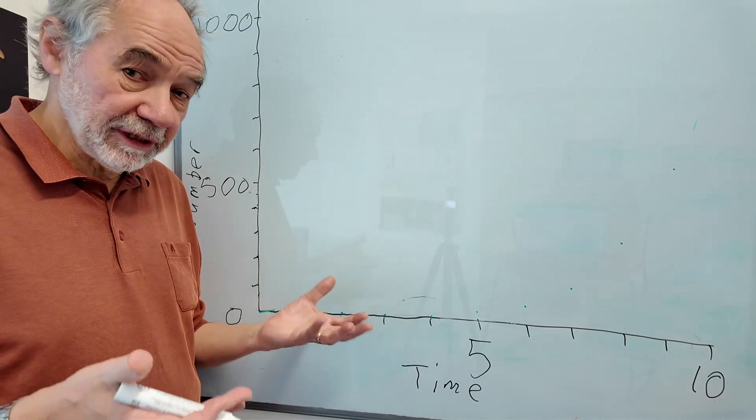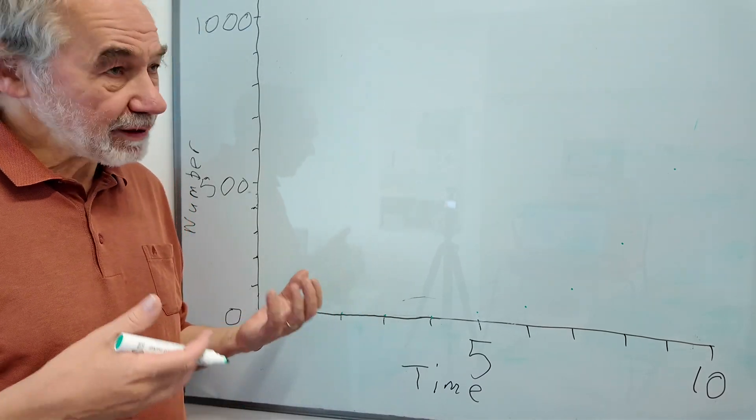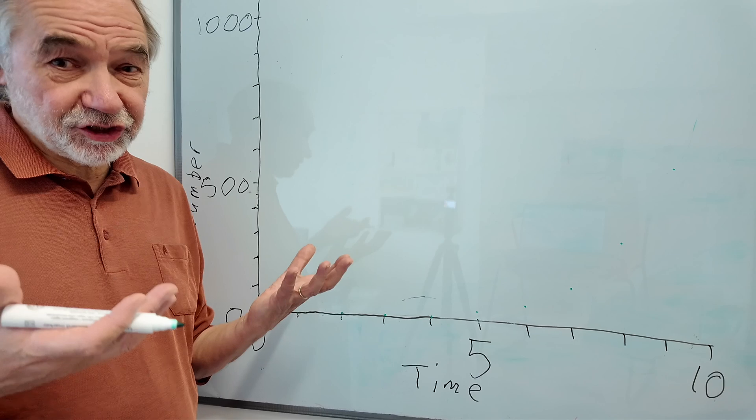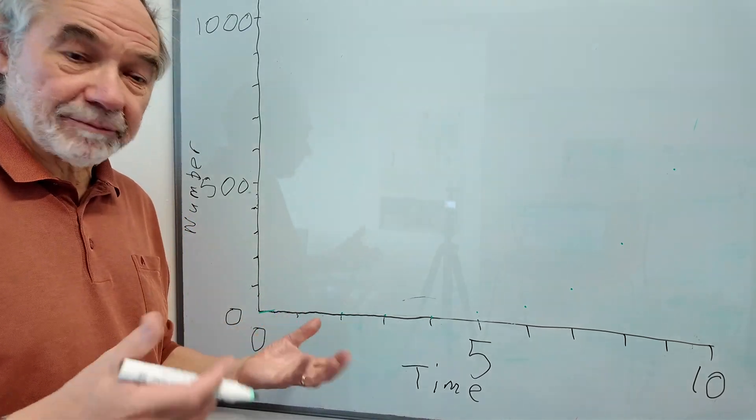Imagine a population that doubles in a given time interval. Perhaps this could be duckweed that splits in half every couple of days.